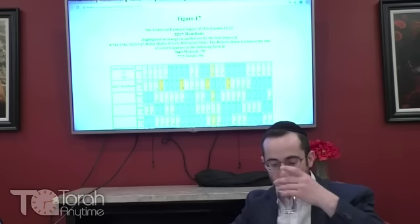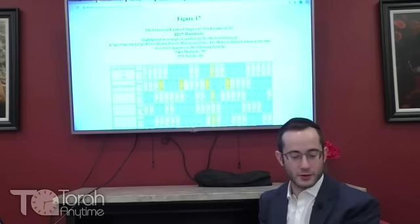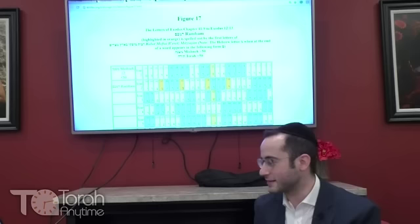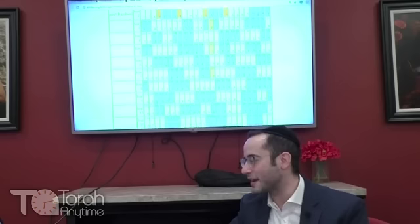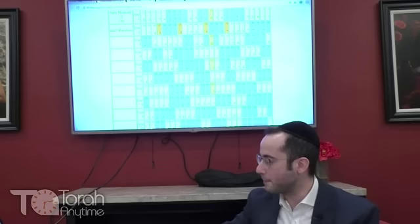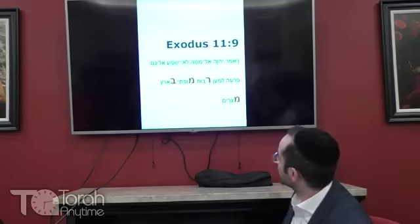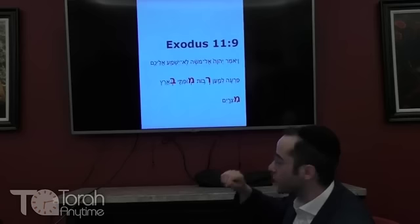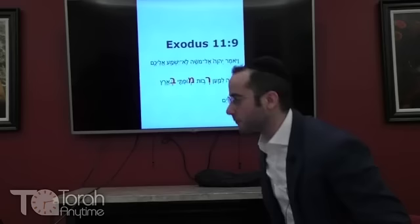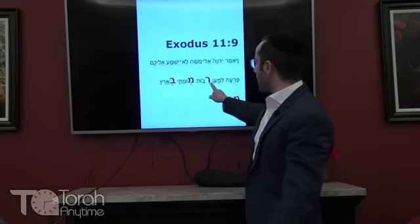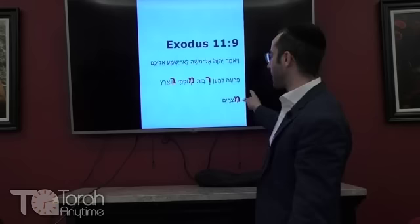The Rambam — Maimonides — was attributed to a verse in the Torah by Nachmanides. In Exodus 11:9, it says, 'And God said to Moshe, Paro will not listen to you, so that I can increase My wonders — rabot moftai — in the land of Mitzrayim.' Take the acronym of 'rabot moftai b'eretz Mitzrayim' — Resh, Mem, Bet, Mem — and it spells Rambam.